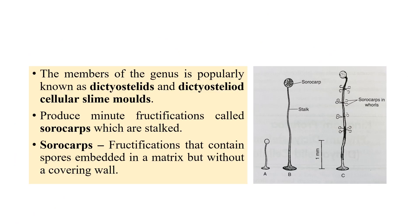The members of this phylum are generally known as dictyosteloids or dictyosteloid cellular slime molds. All are slime molds — everything that comes under protozoa are slime molds. They are further divided into cellular slime molds or acellular slime molds, as discussed in Plasmodiophoromycota.